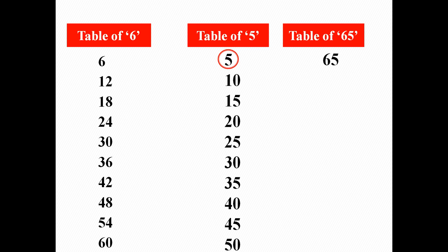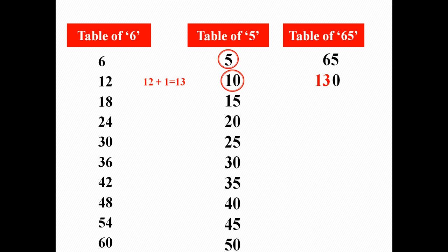So we can say that 65 once has 65. In the second row, here are 2 digits, that is 1, 0. So we will write 1 plus the digit as it is, that is 0, and add 12 and 1, it will become 13. Write this 13 before 0 in the table of 65 — it will become 130. So we can say that 65 2's are 130.